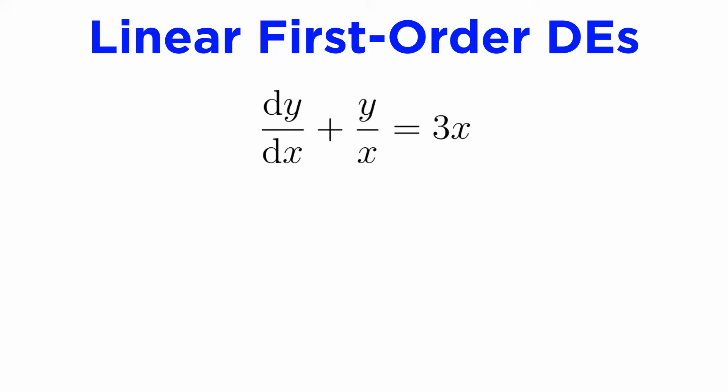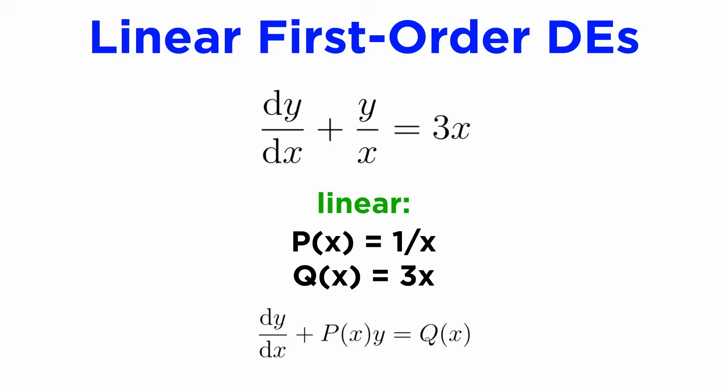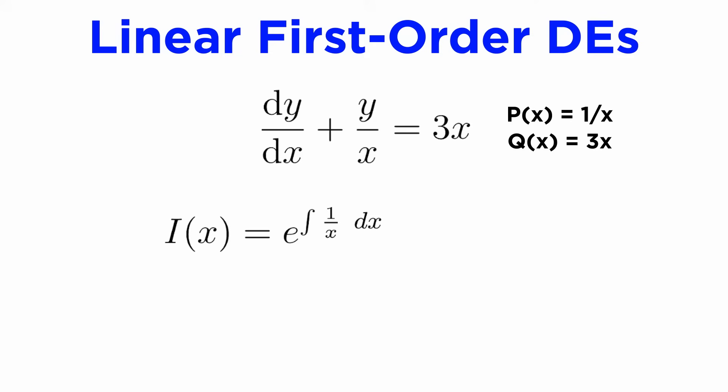Let's see how this works with an example. Suppose we have the differential equation dy/dx plus y over x equals 3x. This DE isn't separable, but it is linear because we can write it in standard form, with p(x) equal to 1 over x and q(x) equal to 3x. Step one is to write down the integrating factor, which is i(x) equals e to the power of the integral of p(x) dx. Here, the integral we need is the integral of 1 over x dx, which is the natural logarithm of x. When finding integrating factors, we do not need to add a plus c — we can just write down the antiderivative on its own. The e and the ln cancel, leaving us with just x for our integrating factor.